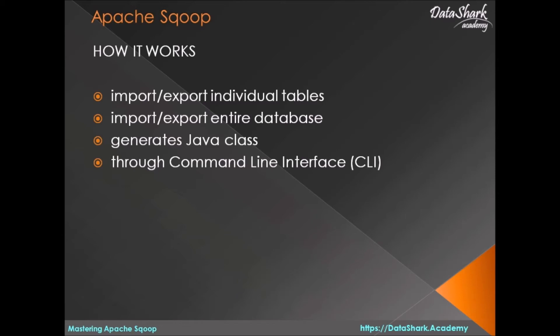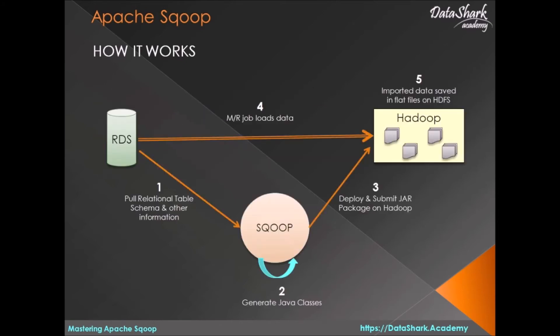For now, let's examine how Sqoop works step by step behind the scenes. Let us assume that you have a relational table called employees, which you need to move to Hadoop using Apache Sqoop. When you fire the Sqoop import command in Sqoop CLI, this is what will happen behind the scenes.